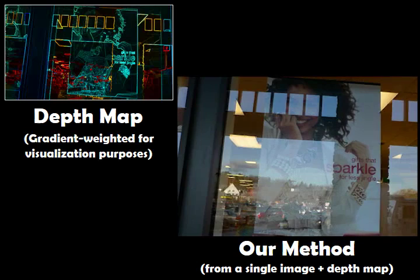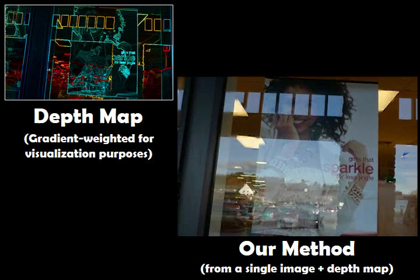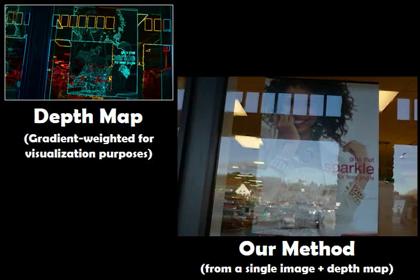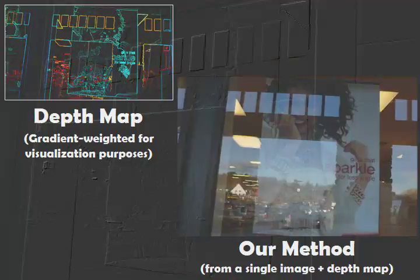In the gradient domain, these problems are alleviated. Poorly textured areas contain no strong gradients, so the quality of their recovered depth does not strongly affect the rendering. Reflections can be easily separated in the gradient domain because gradients are sparse. Our integrated results contain fewer artifacts from poorly textured areas and reflections.